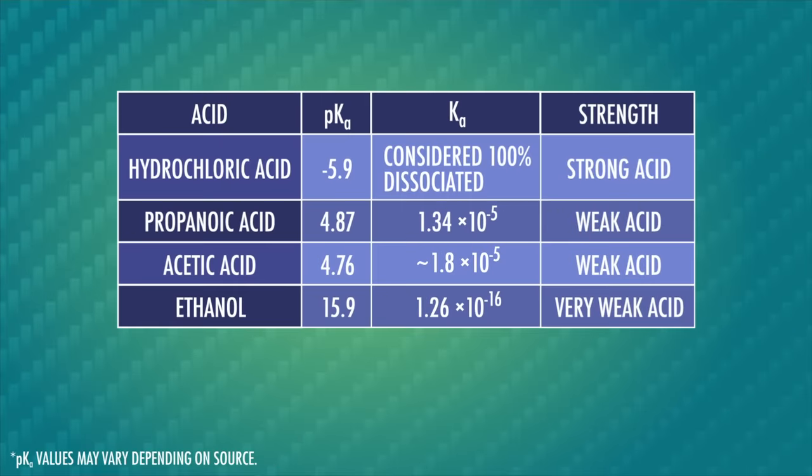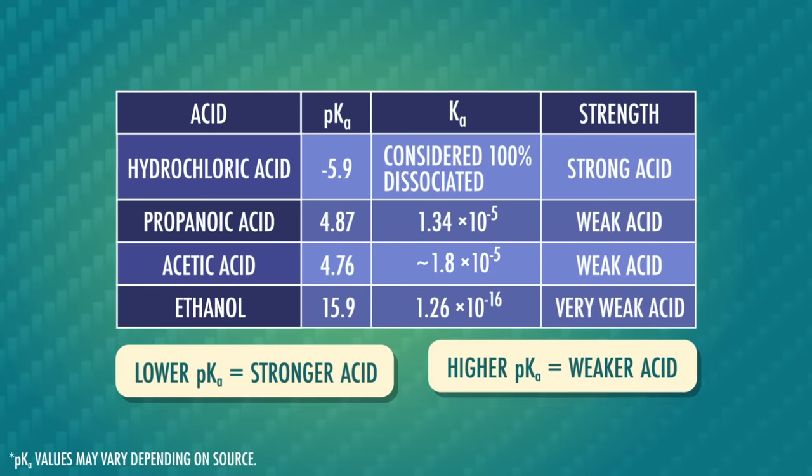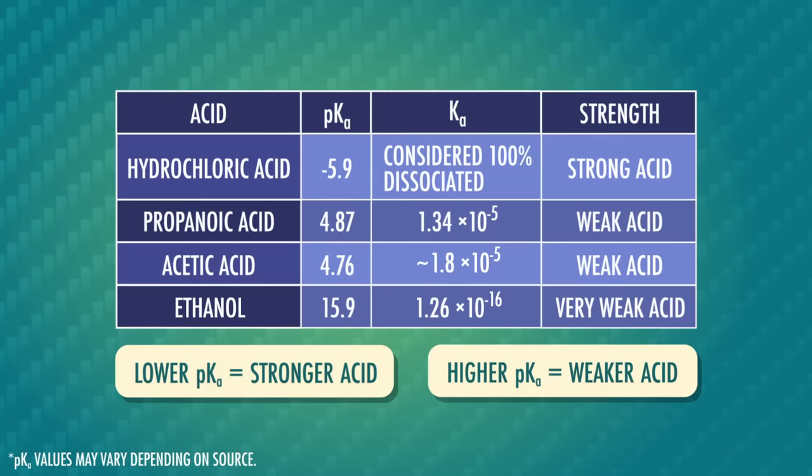We can use pKa to compare two acids. A lower pKa means the equilibrium prefers the product side and a molecule is a stronger acid. And a higher pKa means the equilibrium prefers the reactant side and a molecule is a weaker acid.